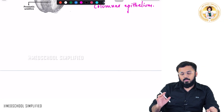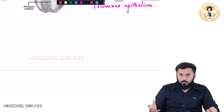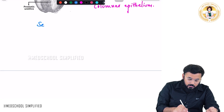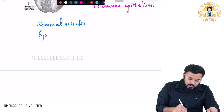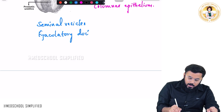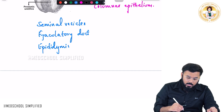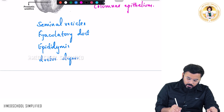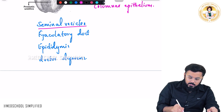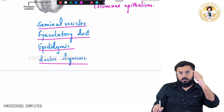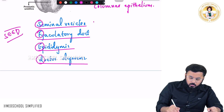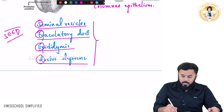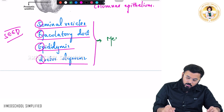Regarding the embryology — from where are these structures derived? The four structures to remember are: Seminal vesicles, Ejaculatory duct, Epithelium, and Ductus deferens. Take the first letters: S, E, E, D — just remember it as SEED. All four of these structures are derived from an embryological duct called the mesonephric duct.